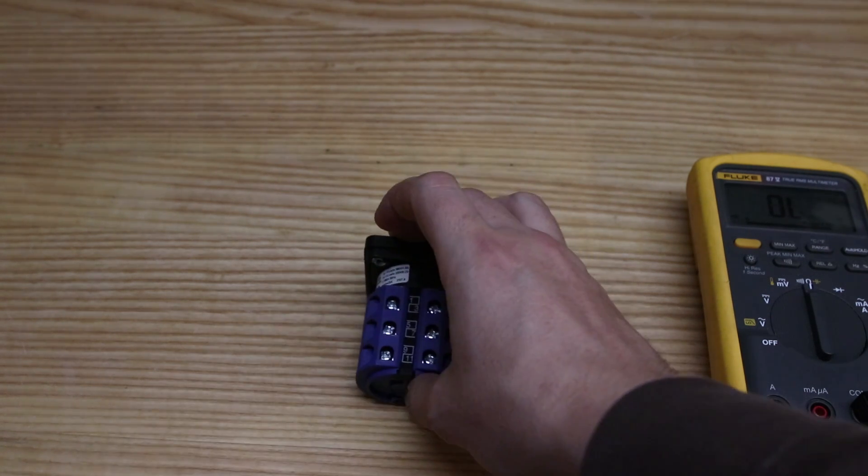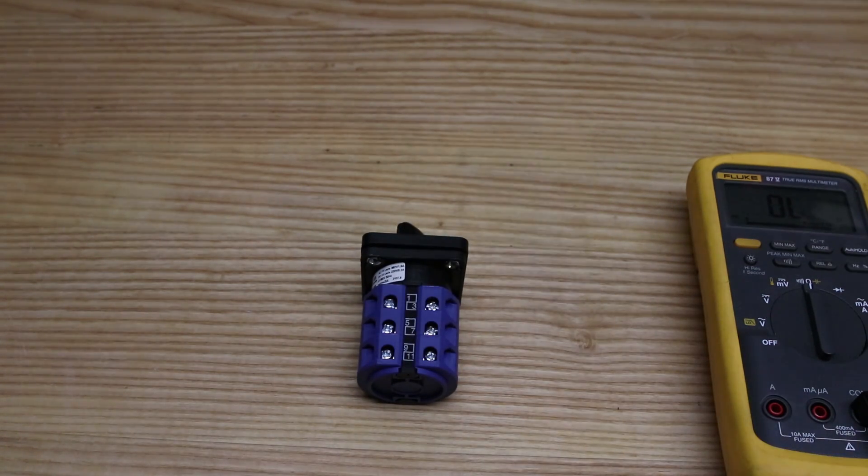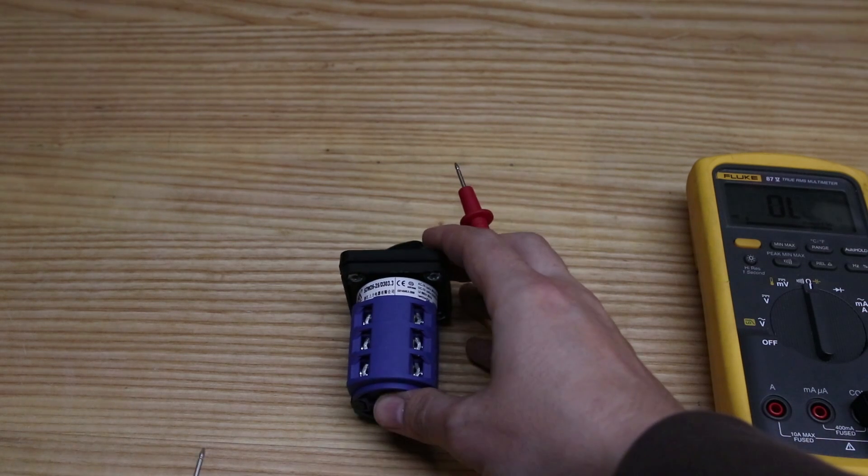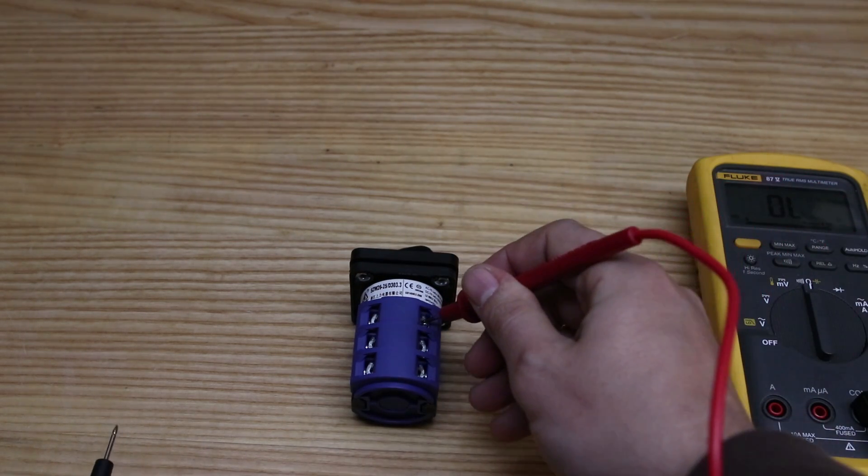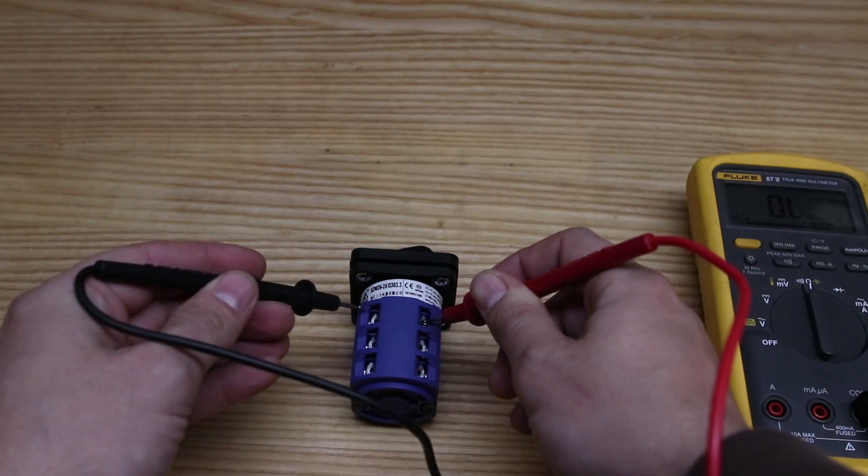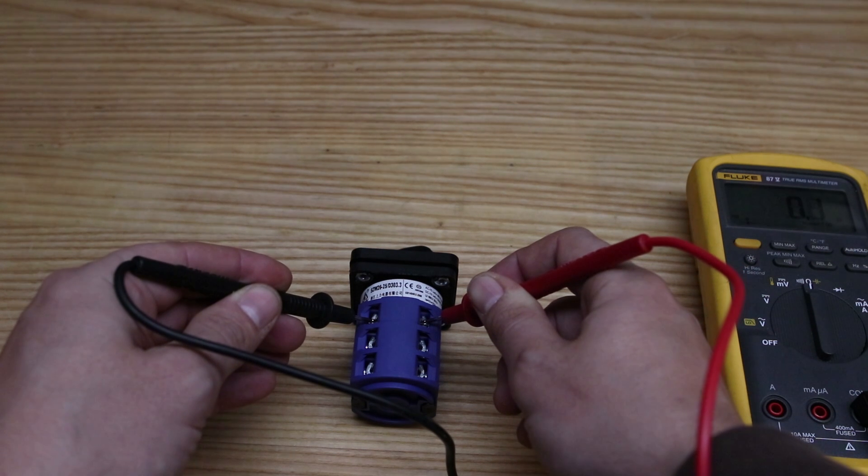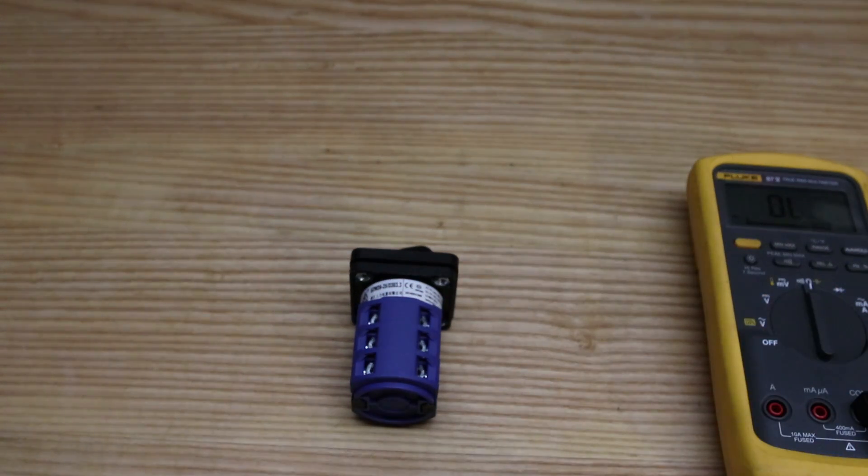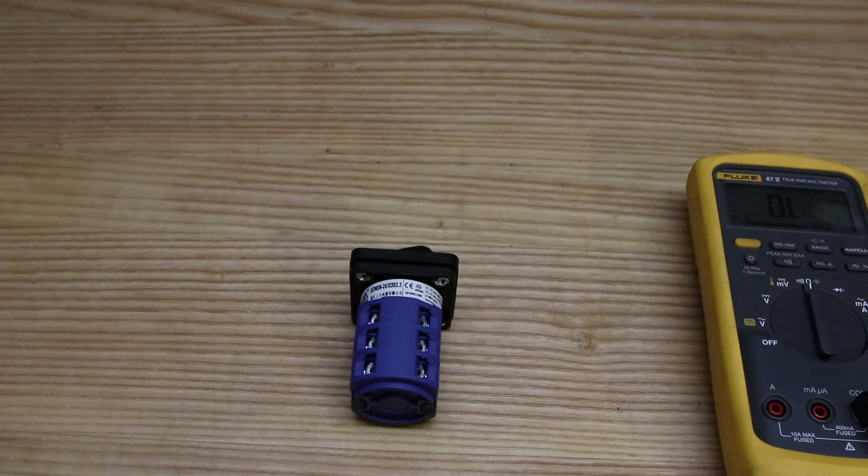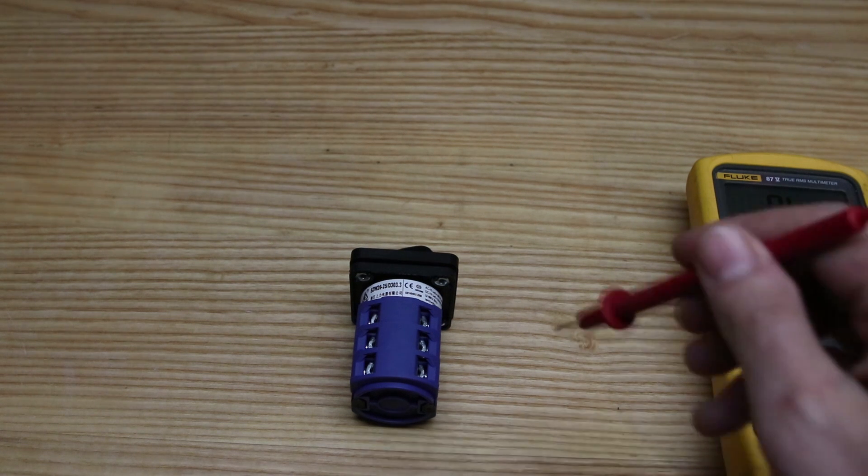We're going to start in order. What I do is I take one connection, and this would be number one. In this case, it would be number two. So I can tell that in position one of the switch, there is continuity between one and two. You would write this down.